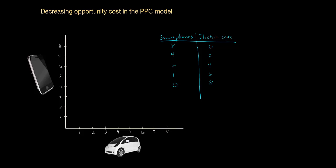In this example we're going to be looking at smartphones and electric cars. We've got a production possibilities table showing that if this country were to allocate all of its resources towards smartphones, it could produce up to eight smartphones. And if it were to allocate all of its resources towards electric cars, it could produce up to eight electric cars. The question is, how does the opportunity cost of electric cars change as the output of electric cars increases in terms of how many smartphones are going to be given up?